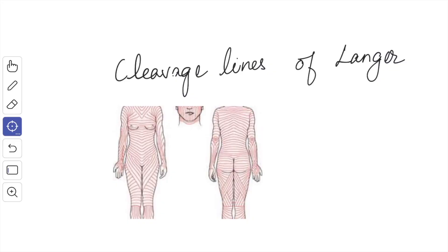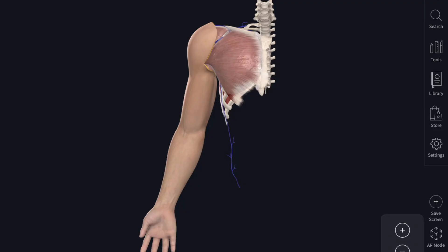Next we will see about the cleavage lines of Langer or lines of tension. These are more or less transversely oriented around the elbow and the wrist, whereas they are more oblique on the flexor surface and almost vertical on the extensor surface.